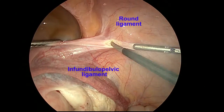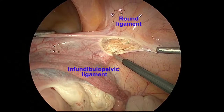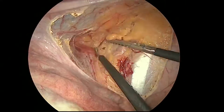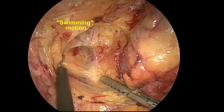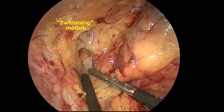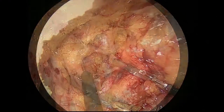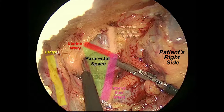The pararectal space can be entered by opening the sidewall peritoneum at the level of the round ligament parallel to the infundibulopelvic ligament. To open the space safely and efficiently, the connective tissue is spread horizontally using both hands in a swimming motion. The pararectal space is bordered by the cardinal ligament anteriorly, the rectum medially, and the internal iliac artery laterally.